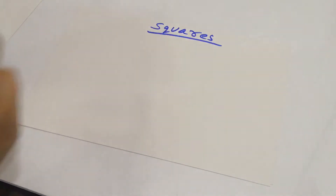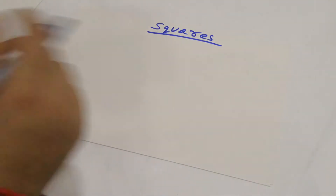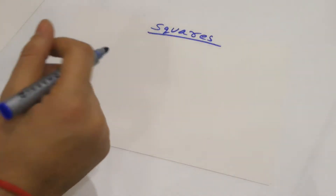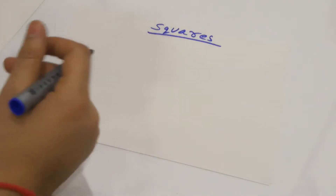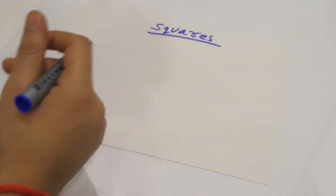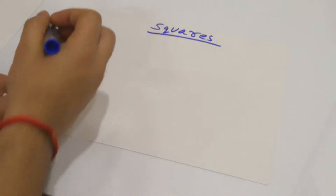Hello friends, welcome to your own channel Reveal A2Z. In this video I am going to tell you how you can find the squares of two or three digit numbers in a very simple way. Now let's take an example.